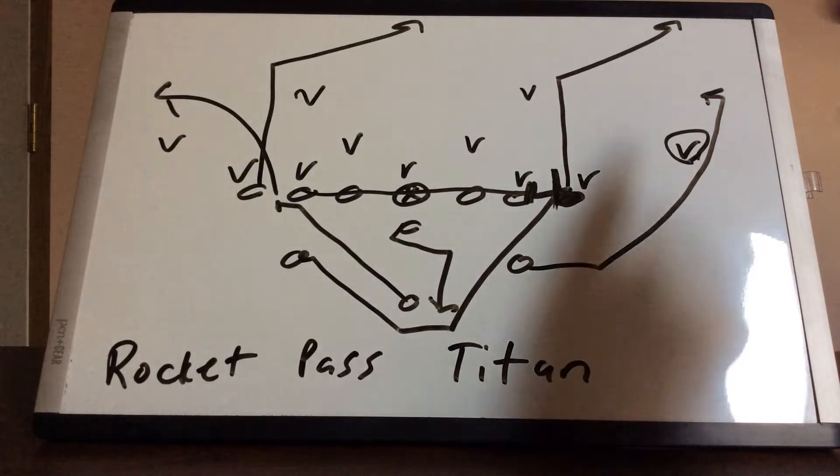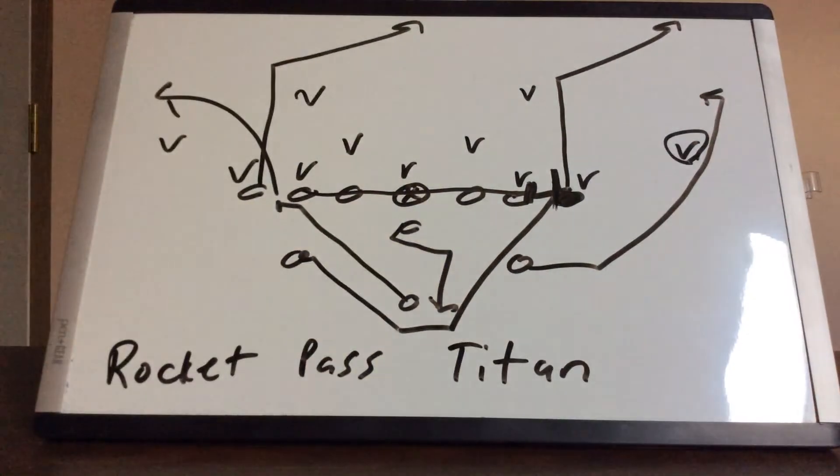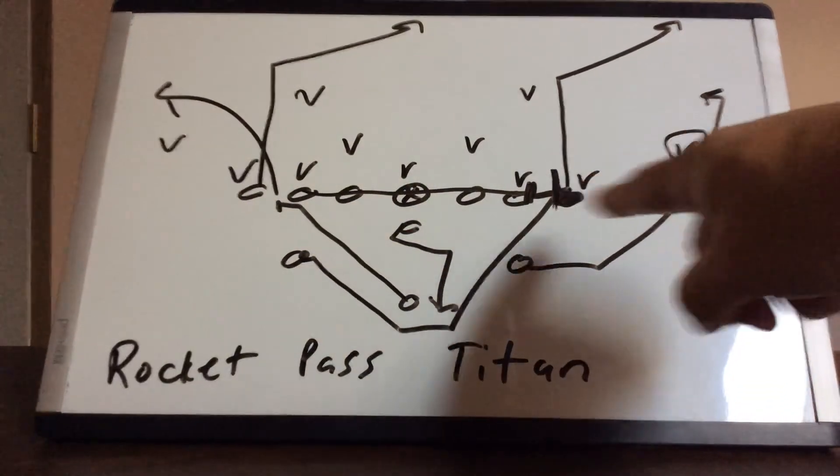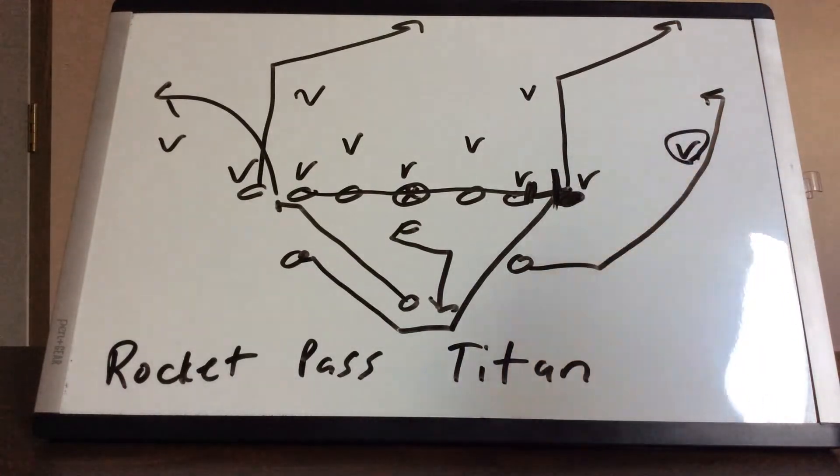The only way he wouldn't throw him the ball is if the corner happens to bail at the snap, which hardly ever happens. If that's the case, the A back's going to take three flat steps, step at 45 degrees. And when he gets to eight yards, he's going to stop, work back to the quarterback and the quarterback would throw him the ball.